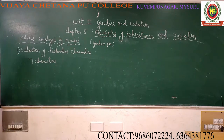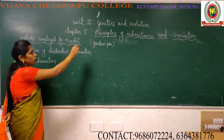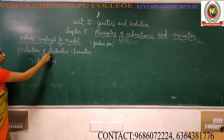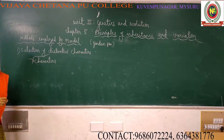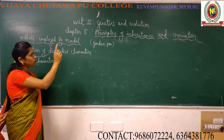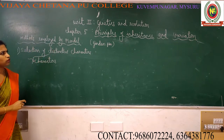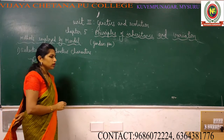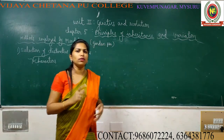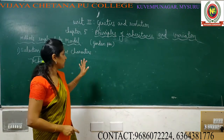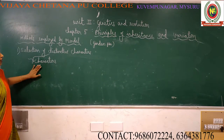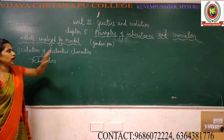Mendel chose 7 distinctive characters of the garden pea plant. The speciality of these 7 characters is that they appeared in 2 contrasting forms — for example, seed color can be two different colors. Let's see which are those 7 characters selected by Mendel in the garden pea plant.